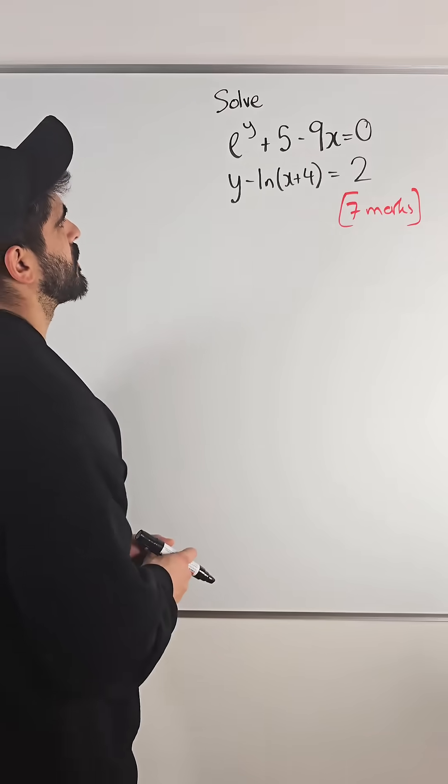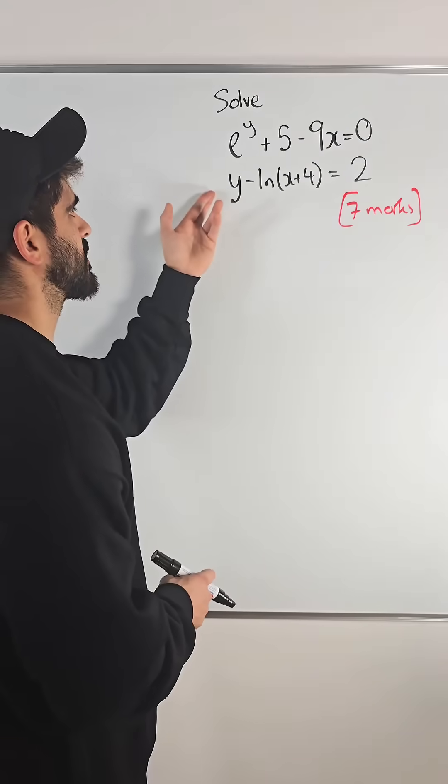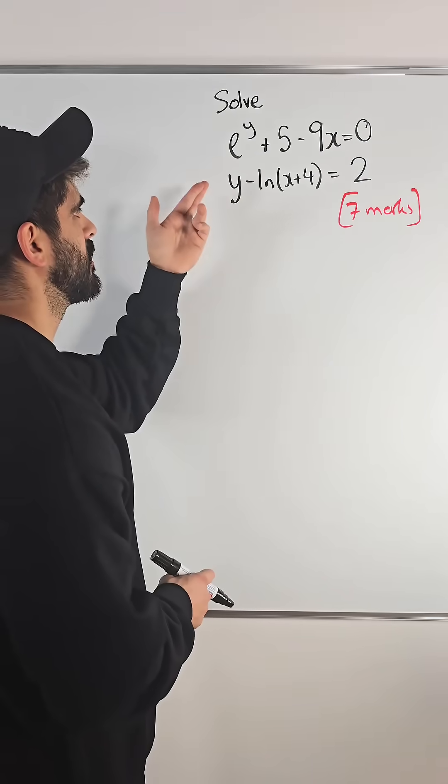So like always, the way we solve this stuff is we rearrange for either x or y, substitute it into the other equation. Now I think the second equation is the easiest one to rearrange for y.